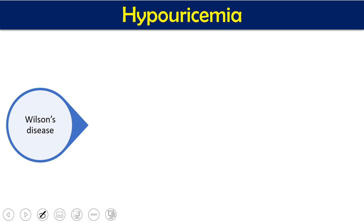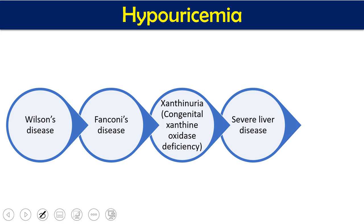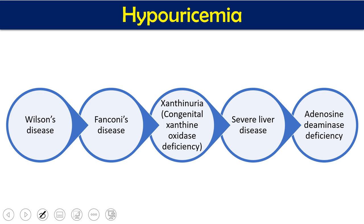Hypouricemia occurs in certain conditions such as Wilson syndrome, Fanconi syndrome, xanthinuria — which is congenital xanthine oxidase deficiency — liver disorders, or adenosine deaminase deficiency. In these conditions, uric acid levels in the blood are abnormally low.